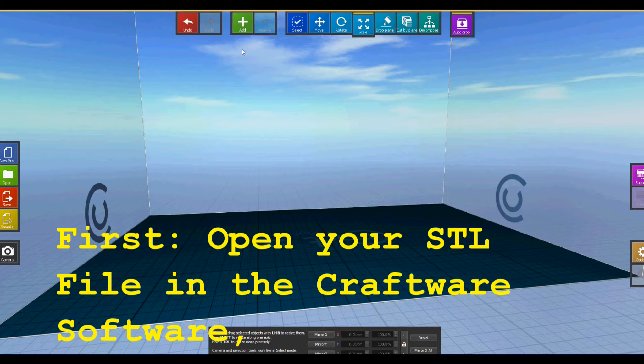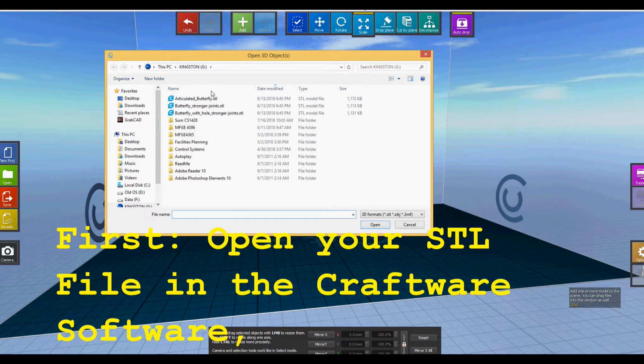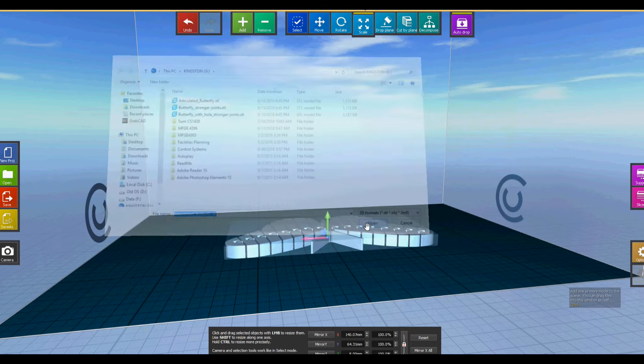To begin printing a part, first you'll need an STL file. This can be downloaded from Thingiverse or created by your own software preference.